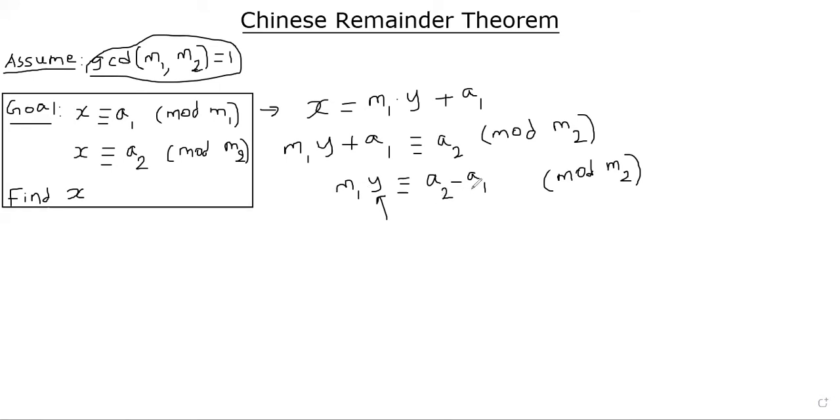Given M1, A2, A1, M2, you can easily find a number y such that M1 times y is congruent to A2 minus A1. So I'm going to assume such a y is b.